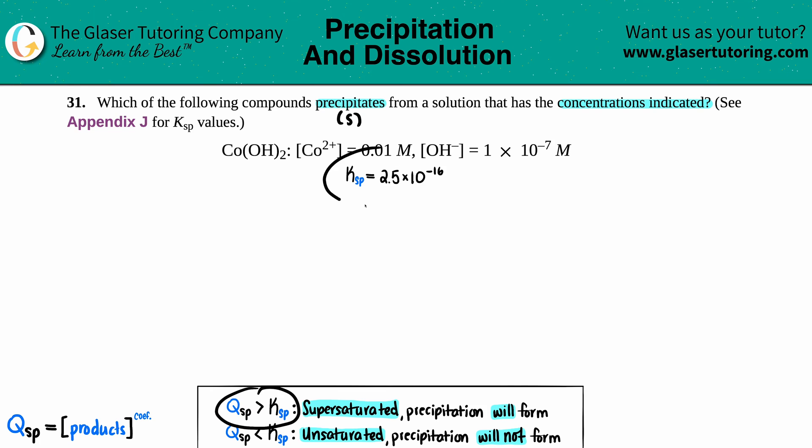If our Q value is greater than the Ksp, we went over the limit and we will form a precipitate. That's a supersaturated solution.